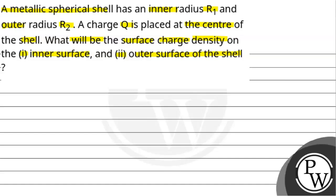So according to the question I have asked, this is a metallic shell. The shell obviously has two radii: inner radius R1 and outer radius R2. Now there is a charge Q which is placed at the centre of this shell. So we will find the surface charge density for the inner and outer surface of the shell.